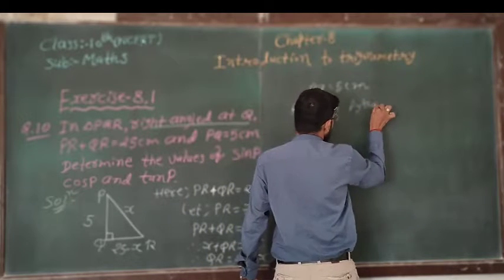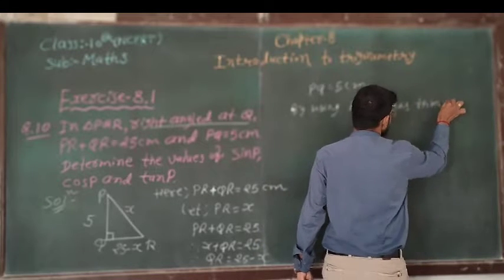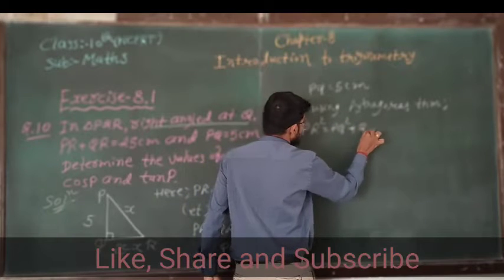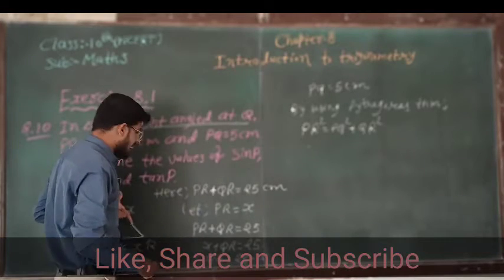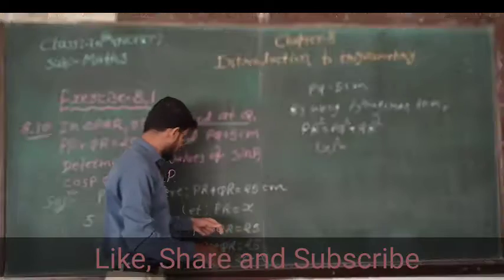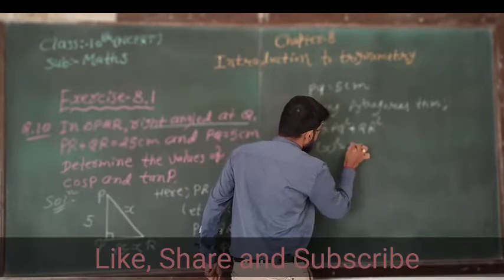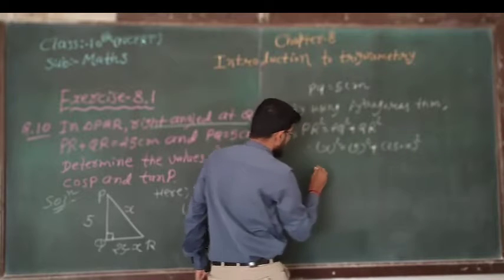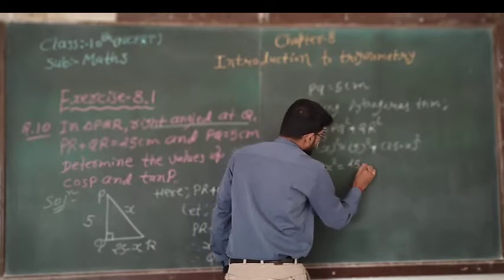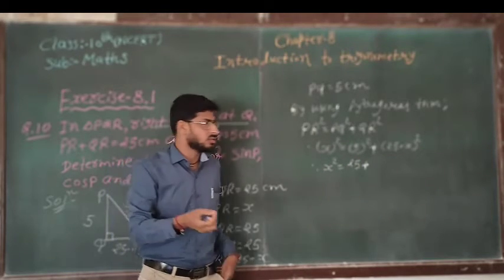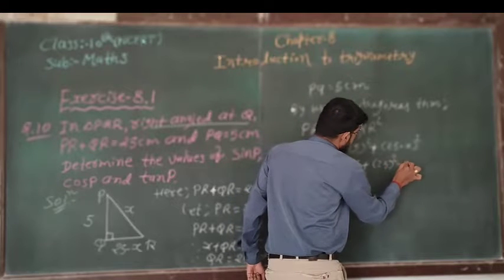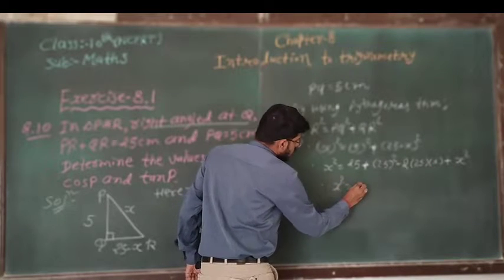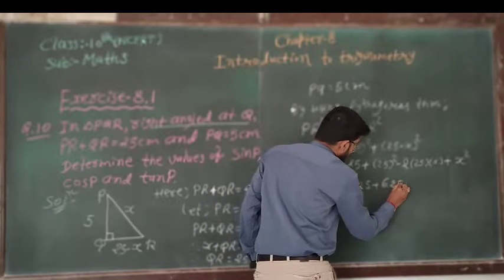PQ square plus QR square equal to PR square. PR is x, so x square equal to PQ square. PQ is 5, so 5 square plus QR. QR is 25 minus x. So x square is equal to 5 square, 25, plus, now we use a minus b whole square formula: 25 square minus 2 times 25 into x plus x square.